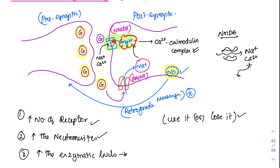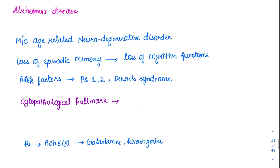We have to remember all these circuits — AMPA and NMDA, with NMDA blocked by the magnesium channel. Before completing memory, there is one common memory-related disorder: dementia. That disease is called Alzheimer's disease, one of the most common age-related neurodegenerative disorders.